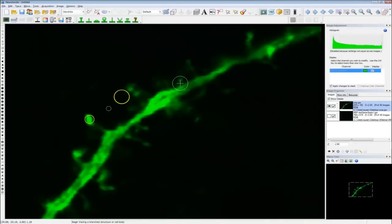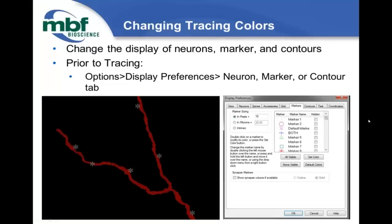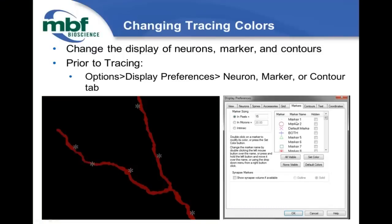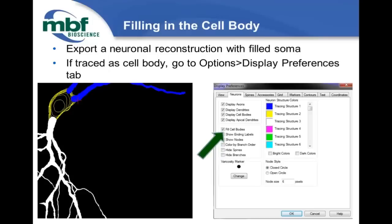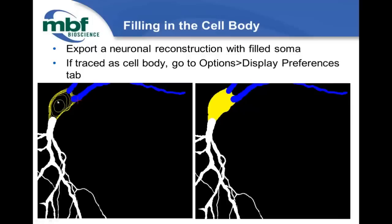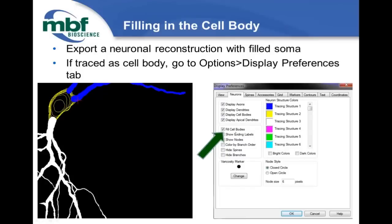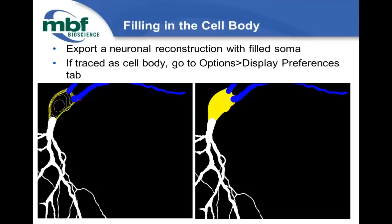For contours, you can change the contour name to match the anatomical region you're delineating and change the contour color. Now let's talk about filling in the cell body. When exporting a neuronal reconstruction, you typically want a filled soma rather than a bunch of lines traced throughout the soma volume. If you traced the soma as a series of cell body traces under Trace > Manual Neuron Tracing, just go to Options > Display Preferences and click the option to fill cell bodies.